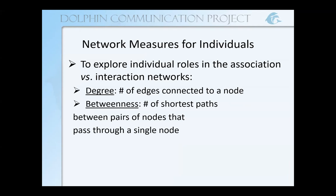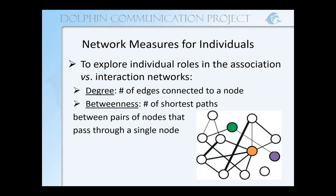Using our simplified network, we can think of betweenness as the number of pairs that are indirectly connected by each node. Looking at this purple node, it doesn't link any pairs of individuals, so its betweenness would be zero. The green node connects the white one to the purple one and more indirectly connects all of those white ones to the purple one. The orange node indirectly connects many more pairs, so the orange node would have the highest betweenness of our three different colored nodes.